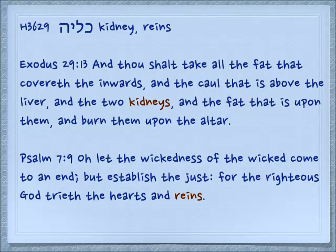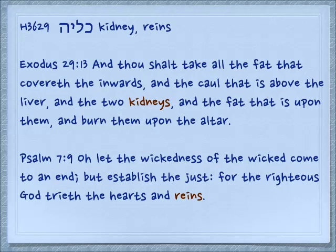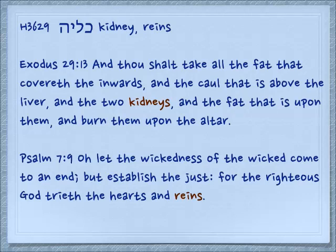Psalm 7:9: 'Oh let the wickedness of the wicked come to an end, but establish the just, for the righteous God trieth the hearts and reins.' Now reins are something we have on a horse to direct it — to pull its head so it turns right or left. What is this referring to? It is referring to your kidneys, and what is it that pulls us to go this way or that way many times — emotions. The kidneys were thought to be the seat of the emotions, and this is not so far afield because your adrenal glands sit directly on your kidneys, making adrenaline, highly reflecting what is going on in your life emotionally.